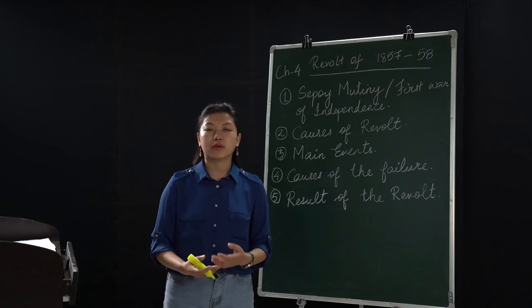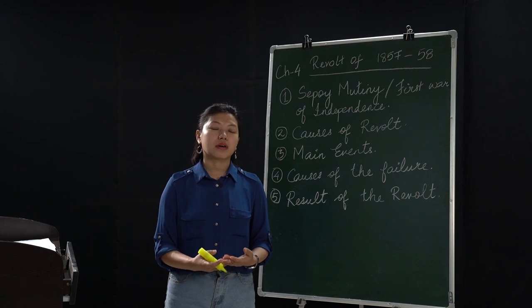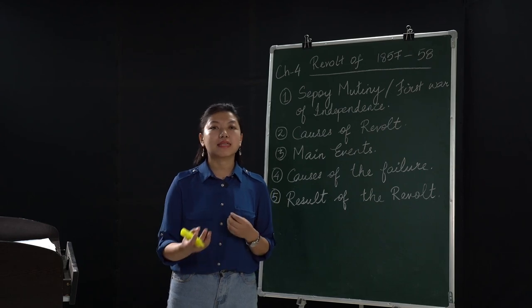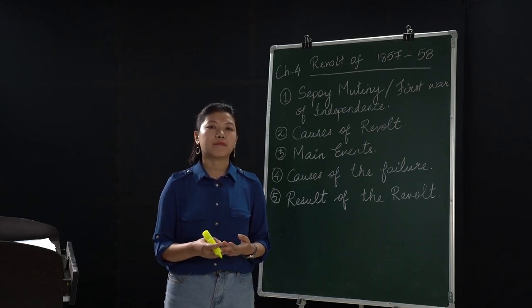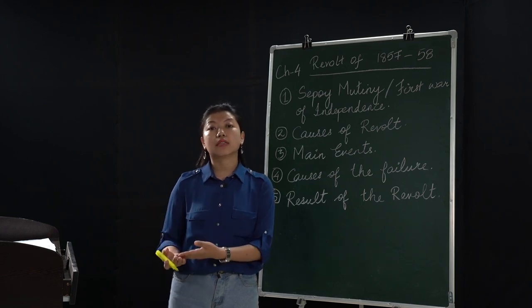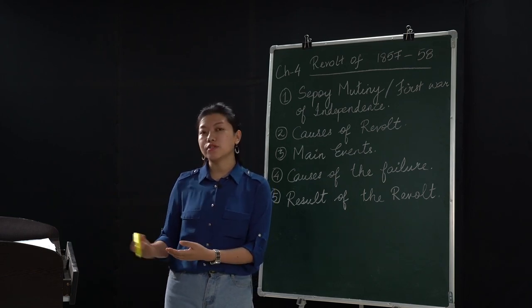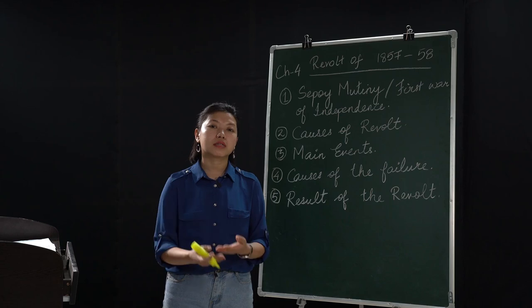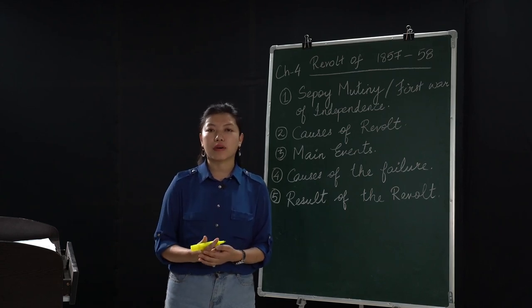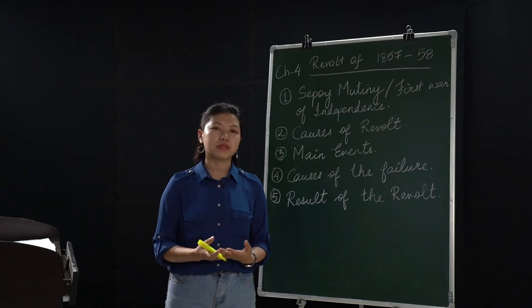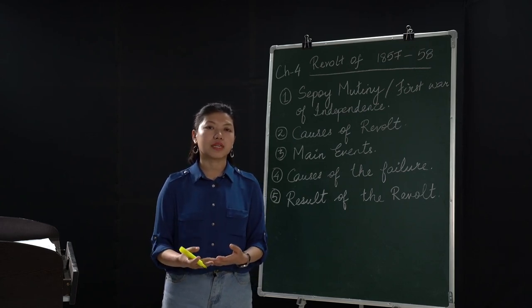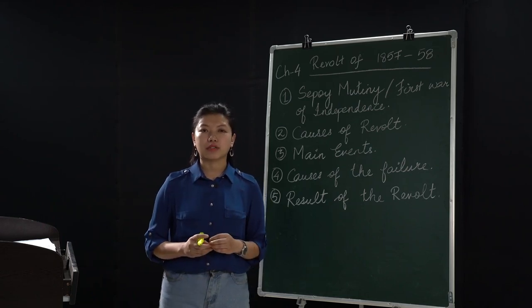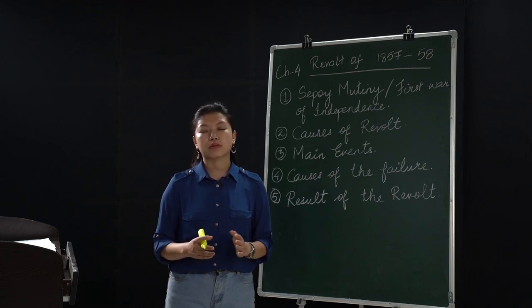Everyone was fighting for their own purpose. Some were fighting because they were unhappy with the landlord system and the annexation policy. For example, Rani of Jhansi's adopted son was not allowed to inherit the throne. These were different reasons why people were fighting against the British — they didn't have one single unified idea of why they needed to remove British rule. Everyone had a different purpose, which was also another cause of failure.